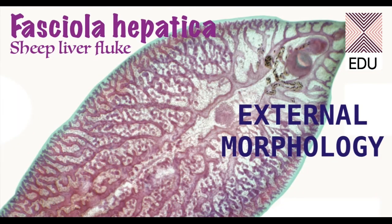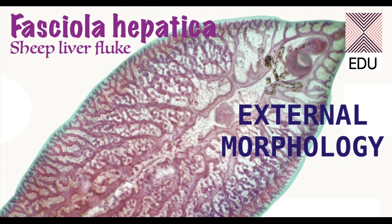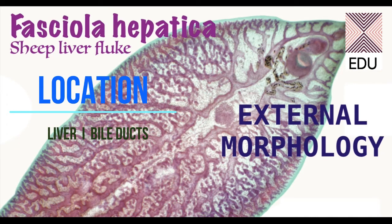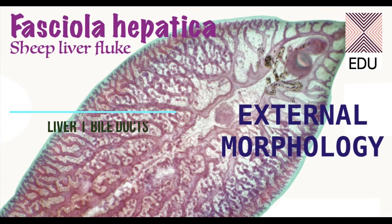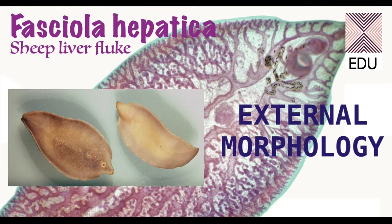Fasciola Hepatica is commonly known as the sheep liver fluke. Flukes commonly inhabit the liver and the bile ducts of vertebrates like cattle, sheep, goat, pig, dog, or even man. But Fasciola Hepatica is most commonly found in the sheep, which is why it has got the common name the sheep liver fluke.